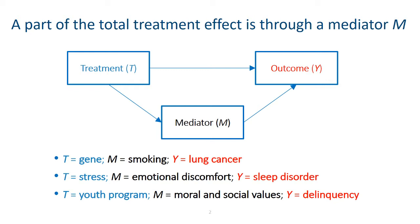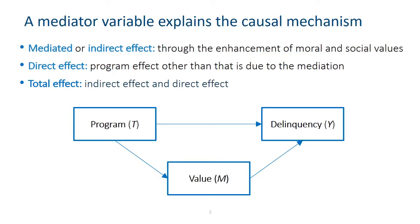Here are some examples. A particular gene causally affects the chance of getting lung cancer, and some of its effect is mediated through its effect on increasing cigarette smoking. Or, your daily stress leads to a sleep disorder, and it is mediated through its induction of emotional discomfort. Or, a youth program reduces delinquent behavior in teenagers through its enhancement of teenagers' moral and social values. Common to all these examples, a hypothesized mechanism or mediation process is represented by the mediator variable.